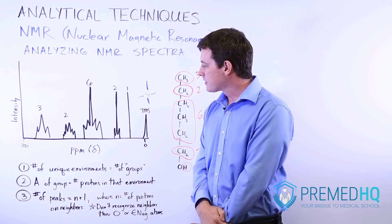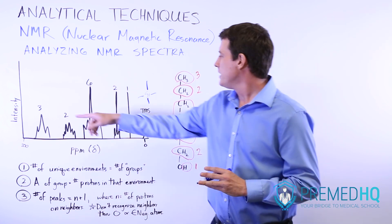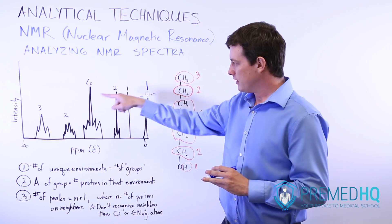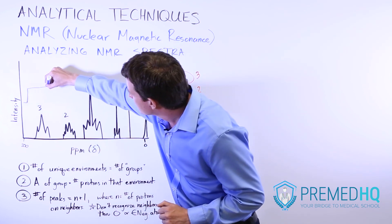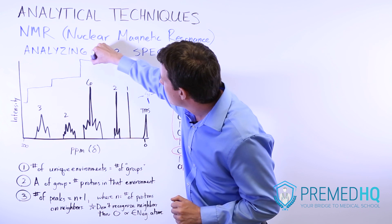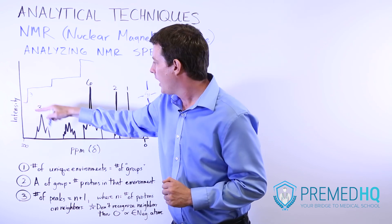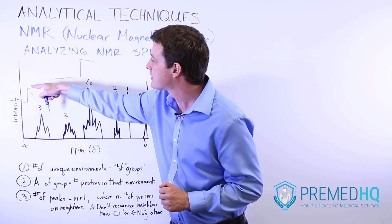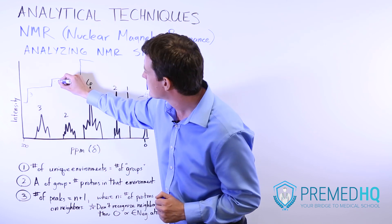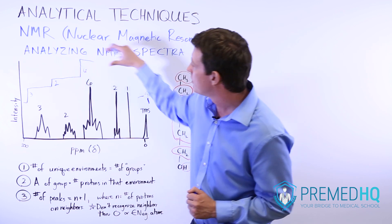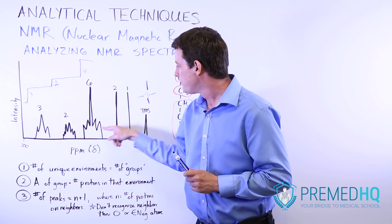The next step is to look at the area underneath each group, which will be provided in different ways. It might be provided as a number listed on top corresponding with the area, or as a step plot where each step has a height corresponding with the number of protons in that group. Starting at zero, as we pass a group containing three protons, we take a step up equal to an area of three, then a step for two, then one for six, and so on.